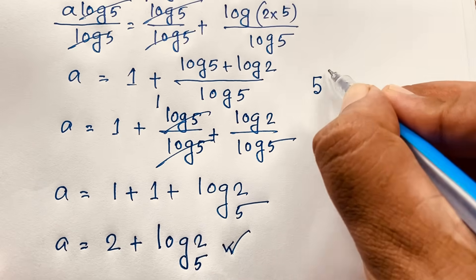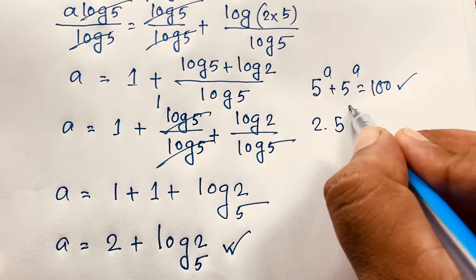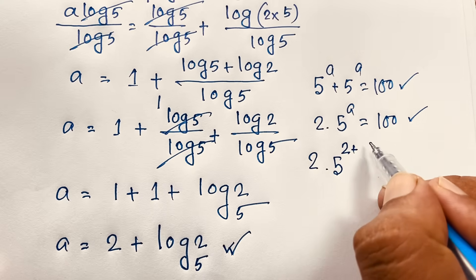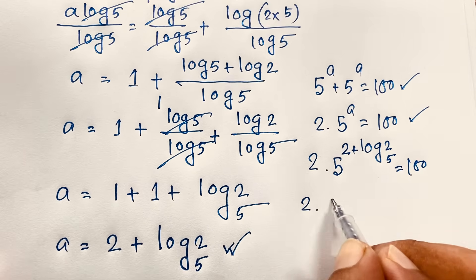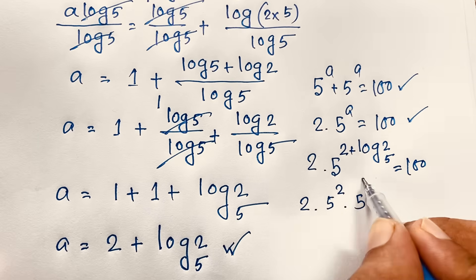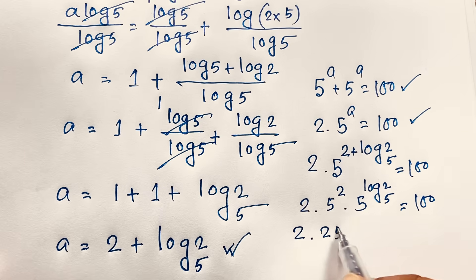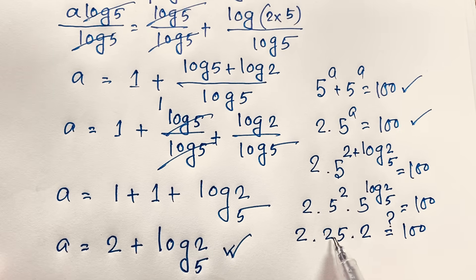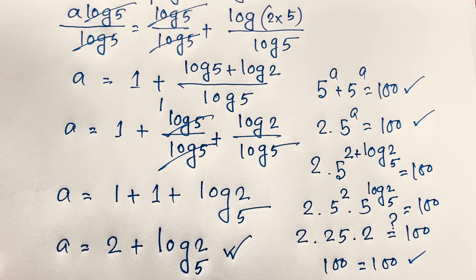Let's verify our answer. Our question is 5 to the power a plus 5 to the power a is equal to 100. This gives 2 times 5 to the power a equals 100. Substituting a equals 2 plus log base 5 of 2, it becomes 2 times 5 to the power 2 times 5 to the power log base 5 of 2 equals 100. This is 2 times 25 times 2 equals 100, since 5 to the power log base 5 of 2 equals 2. So 2 times 25 is 50, and 50 times 2 is 100 — left-hand side equals right-hand side.